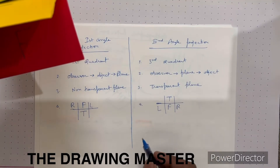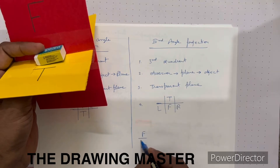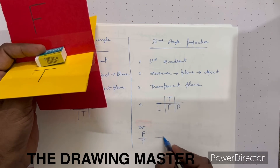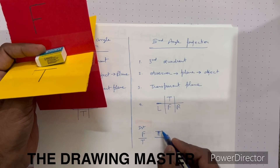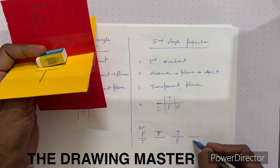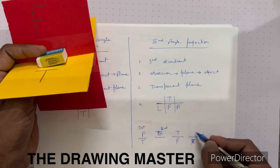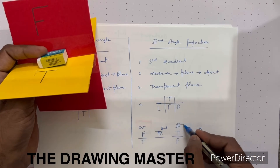In first angle projection, the front and top views do not overlap. In second angle projection, front and top overlap — that's why we don't use it. In third angle projection, top comes before front. In fourth quadrant, front and top also overlap. So we use only first and third angle projections.